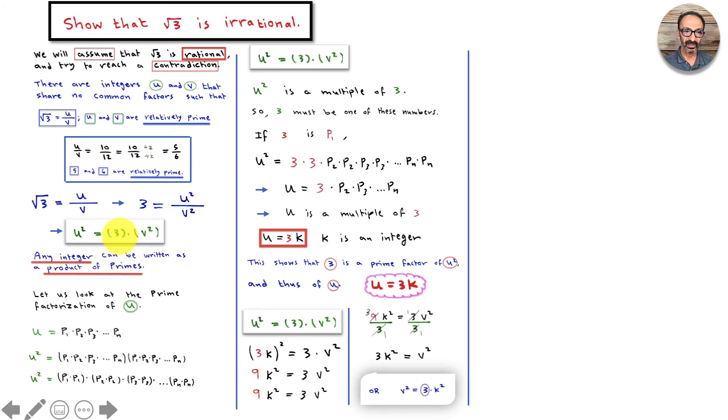When we started right here, all this gave me the conclusion that when 3 is a factor of u squared, we showed that 3 is a factor of u. Now 3 is a factor of v squared. In the same way, I'm not going to write all this again with v squared and v.